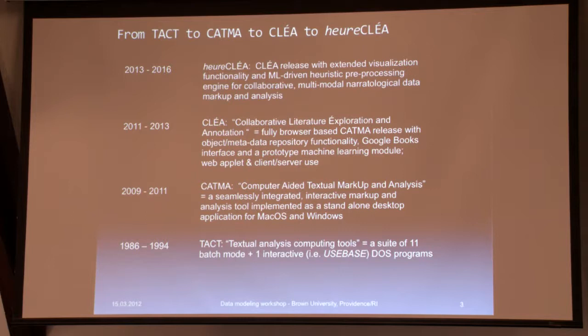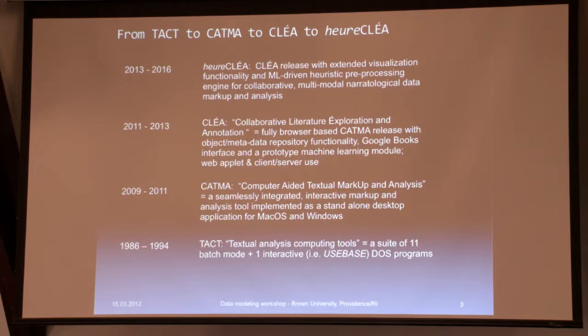We're currently busy with a third step called CLIA — Collaborative Literature Exploration and Annotation Environment. If you should ask why there is an accent on the 'e' in exploration, it was for no other reason than to confuse the recipients of our grant proposal, which was Google. We wanted to demonstrate that there are indeed characters that are a bit more difficult than straightforward ASCII. They appreciated that and gave us money to do this. CLIA is going to be fully browser-based, Java-based, and it can run in a server environment, but also as a web applet on your machine, backed up by a repository function which we're currently developing.